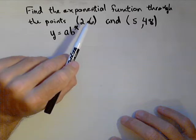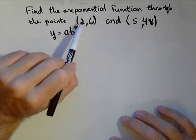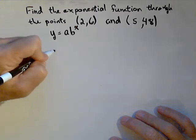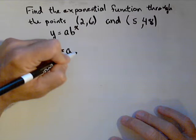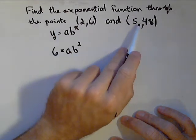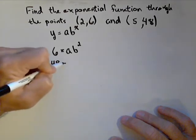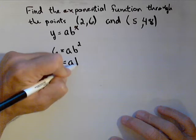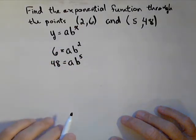Now, what we're gonna do is we're gonna set up a model for each point. This is an x value, this is a y value. So if I plug those in, I get six equals ab to the two. And I'll do the same thing with this point. 48 equals ab to the five. And I write them right on top of each other. And you're gonna see why in a second.